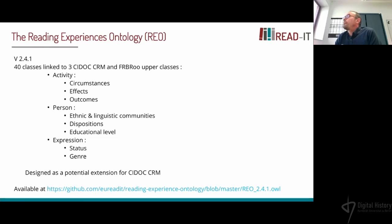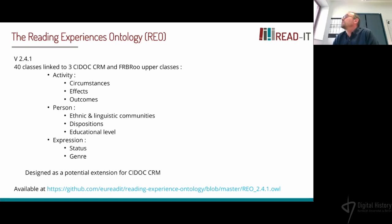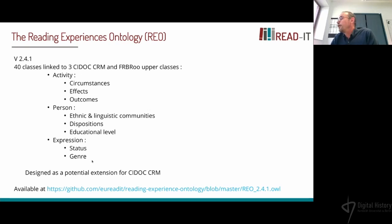The Reading Experience Ontology, REO, consists of 40 classes linked through two main CIDOC-CRM classes — the activity class — and we added features about circumstances, effects, and outcomes. For example, about the person's specific disposition, and about the expression, where we rely on the FRBRoo F2 Expression class. The file is available for download at our GitHub repository.